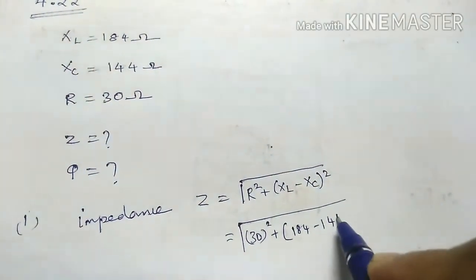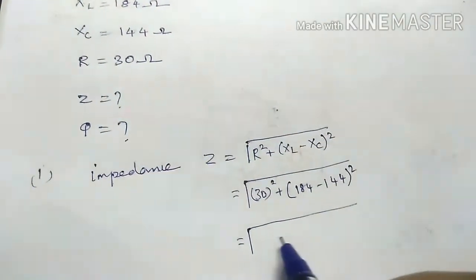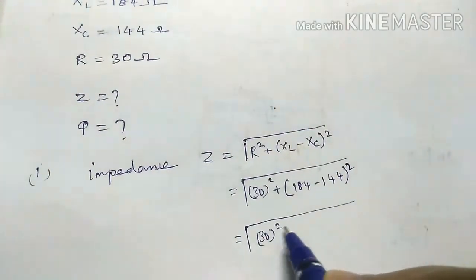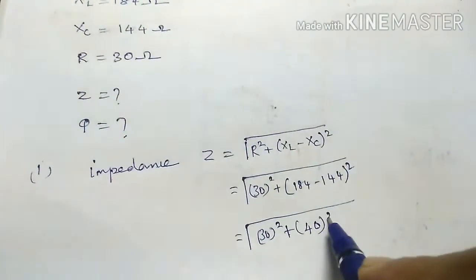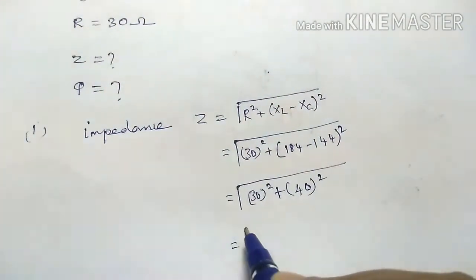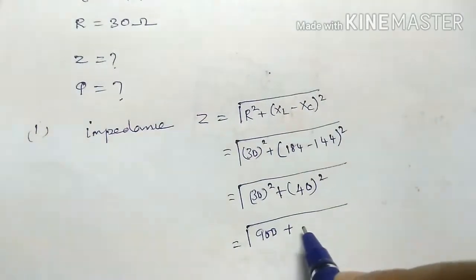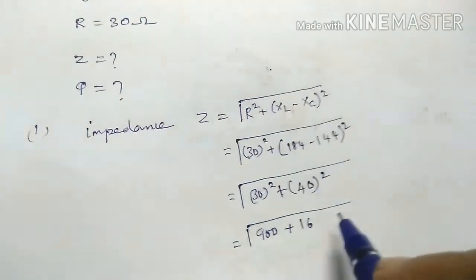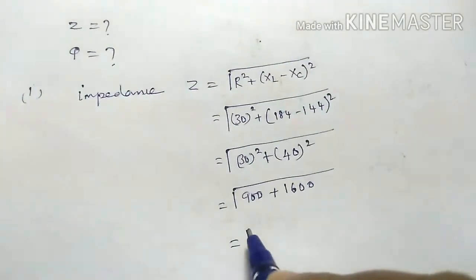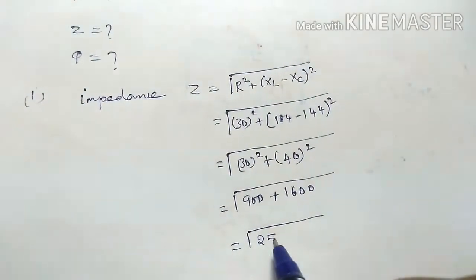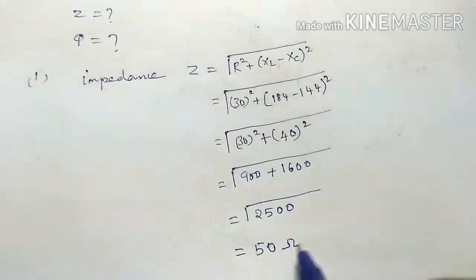So R² is 30² plus XL is 184, XC is 144². Now 30² is 900, 40² is 1600. Square root of 2500, Z is 50 Ohm.